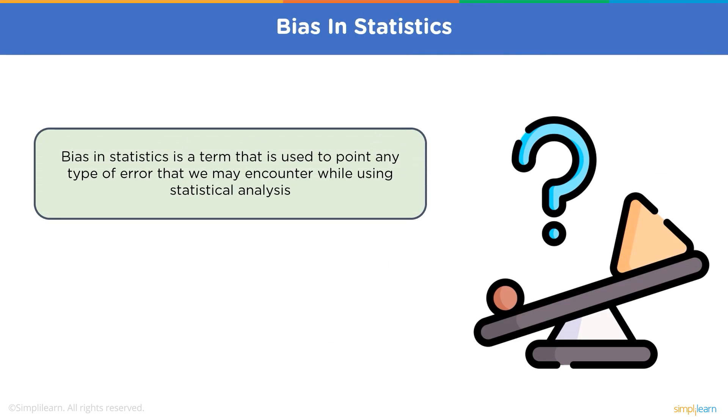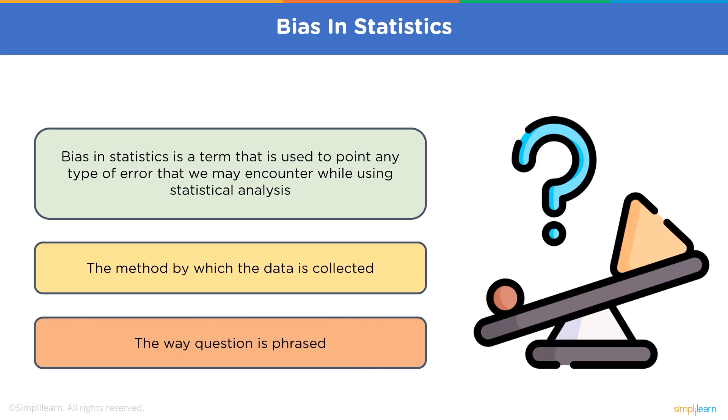What is bias in statistics? Bias in statistics is a term that is used to refer to any type of error that we may find when we use statistical analysis. We can say that it is an estimator of a parameter that may not be confusing with its degree of precision. The reasons for this bias may be that the method by which the data is collected may be faulty or the way the question is phrased may not be accurate.